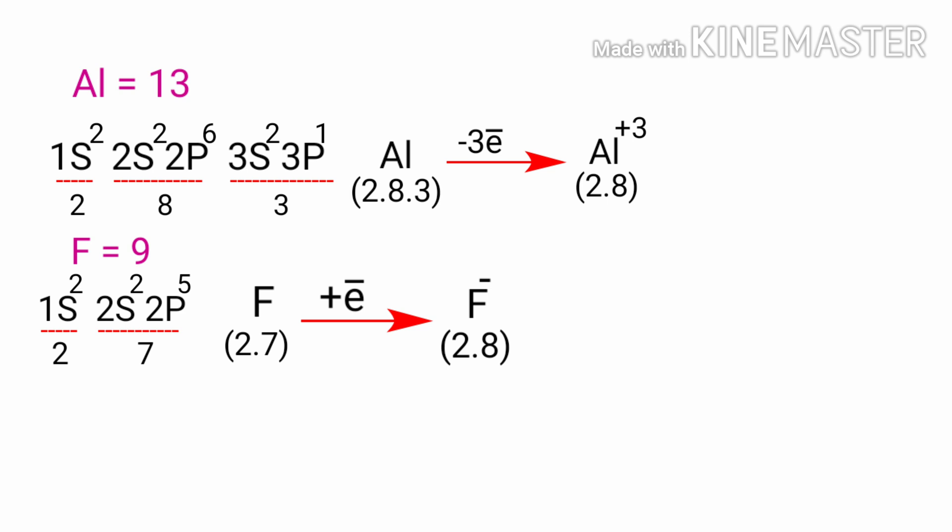it tends to gain an electron to create an ion with nine protons, ten neutrons and ten electrons, giving it a net charge of minus one.